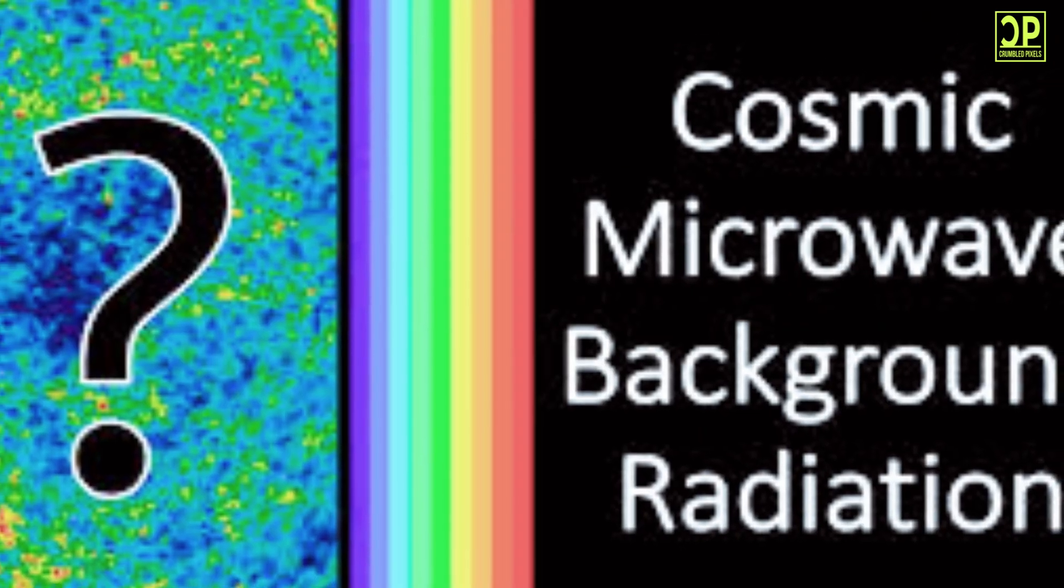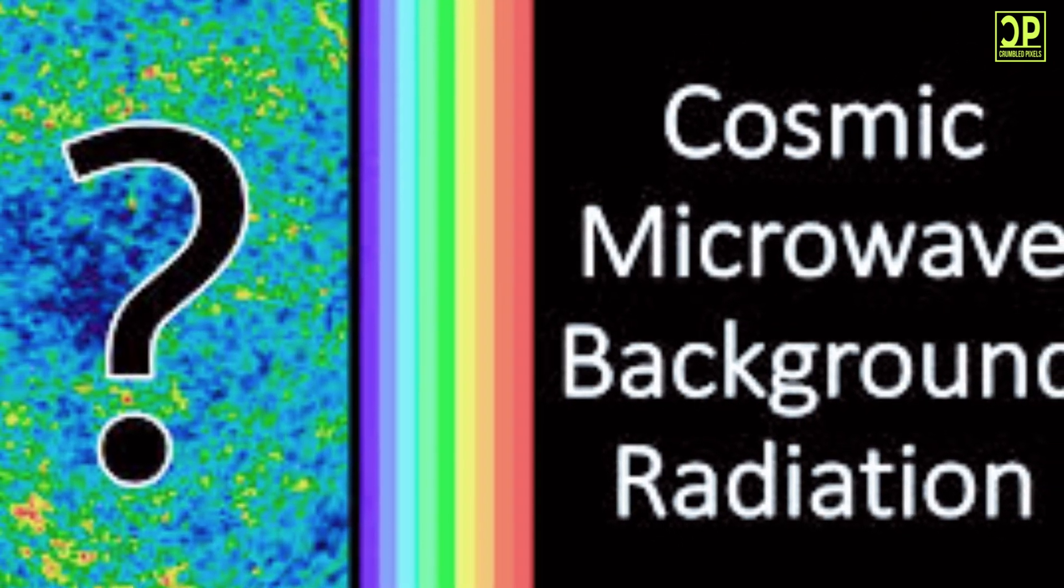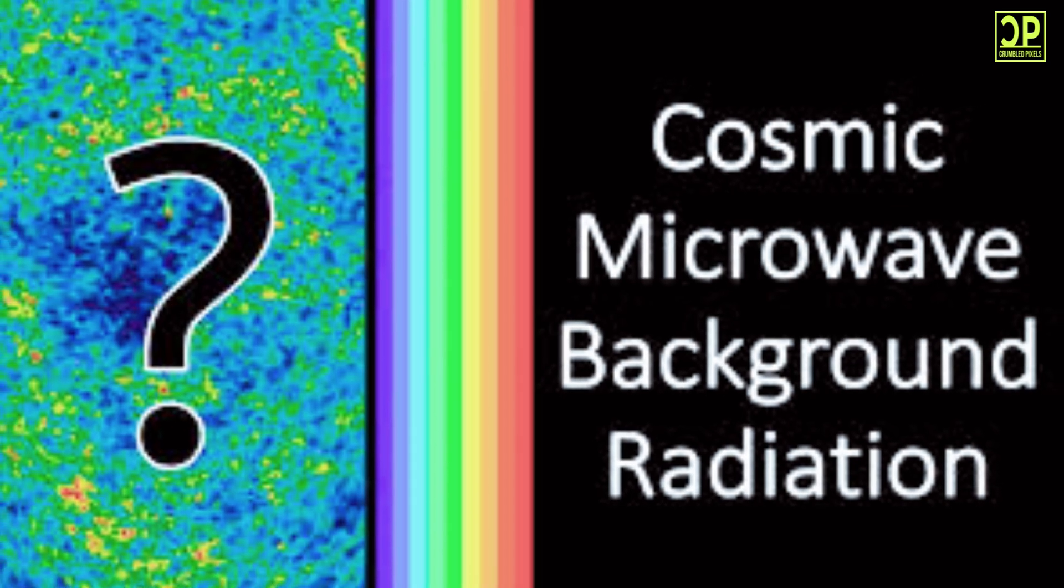According to NASA, CMB fills the universe, and in the days before cable TV, every household with television could see the afterglow of the Big Bang by turning the television to the in-between channel. You could see the CMB as a static signal on the screen. So to bolster evidence the Big Bang theory is incorrect, you'd need to explain the CMB another way.